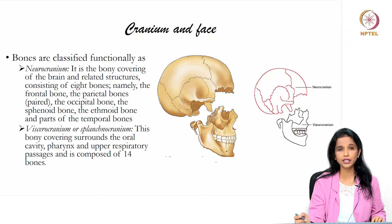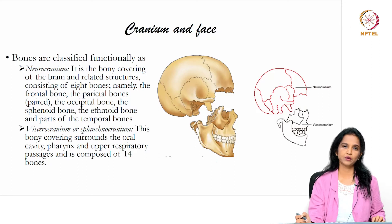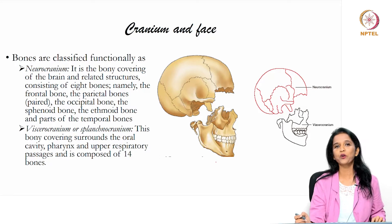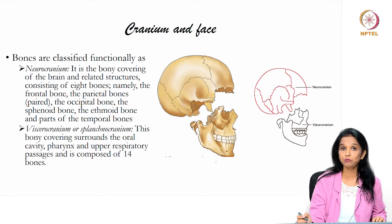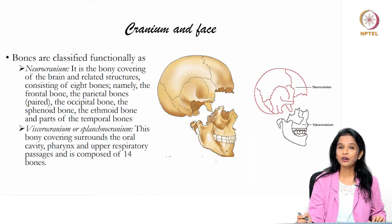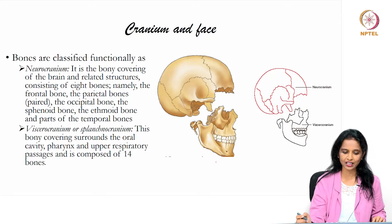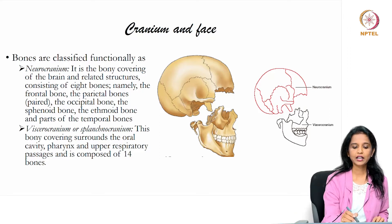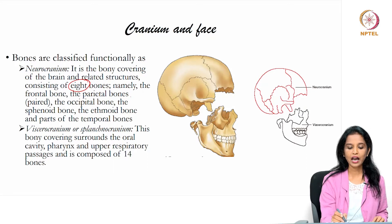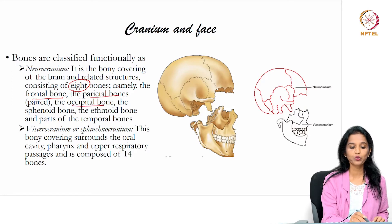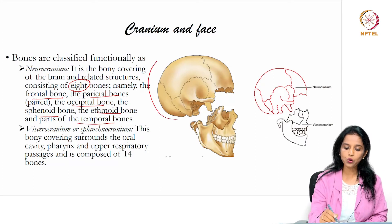Now we move on to a broad classification of the craniofacial bones. They are classified functionally into two: the neurocranium and the viscerocranium. The viscerocranium is also known as the splanchnocranium. The neurocranium, as the name beautifully suggests, encloses the brain — the most vital part of the human body — and contains 8 bones: the frontal bone, parietal bone, occipital bone, sphenoid bone, ethmoid bone, and parts of the temporal bone.